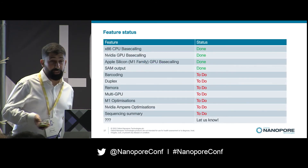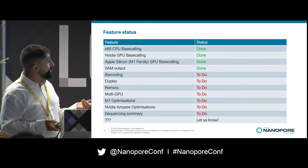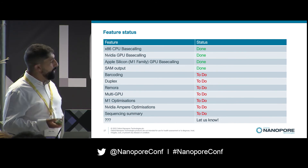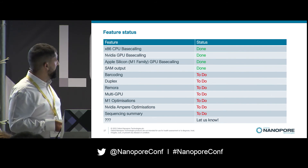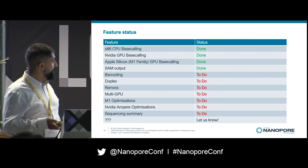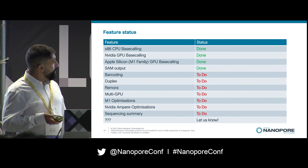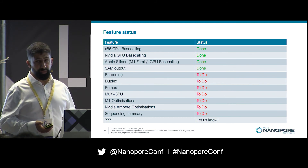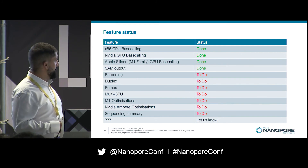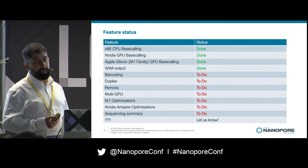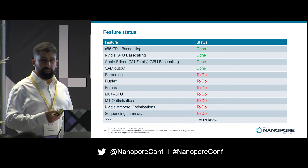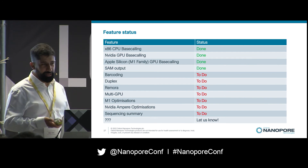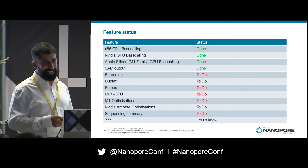Our feature status: we've released a preview version. We've got CPU, GPU, and M1 base calling currently working. We output to SAM already. We've got a lot still to do, and you'll be seeing rolling updates on GitHub. Barcoding, duplex, addition of Remora, and multi-GPU support are almost there. M1 and NVIDIA optimizations are ongoing — you're going to see this getting a lot faster over the coming weeks and months. Sequencing summaries is a feature we intend to add very soon. If there's any feature missing, don't be shy — file a GitHub issue or email one of the devs. I can't promise we'll implement every feature, but we will take it very seriously.